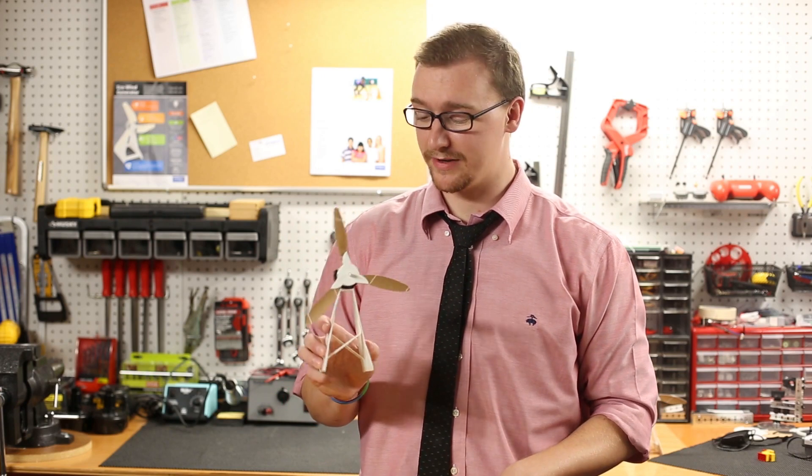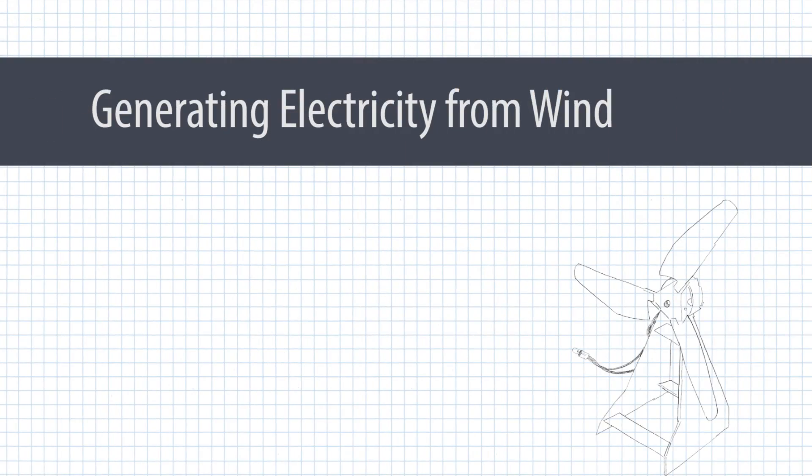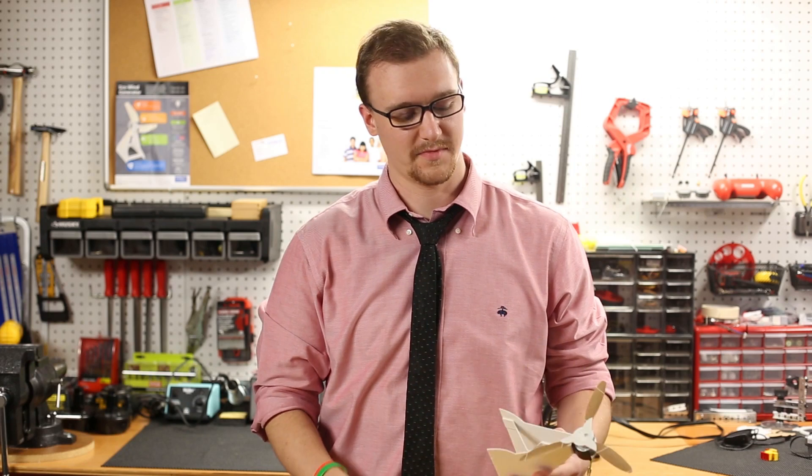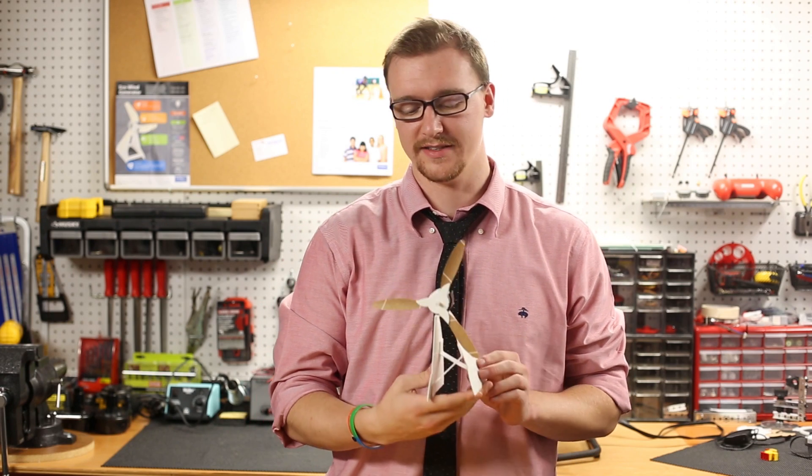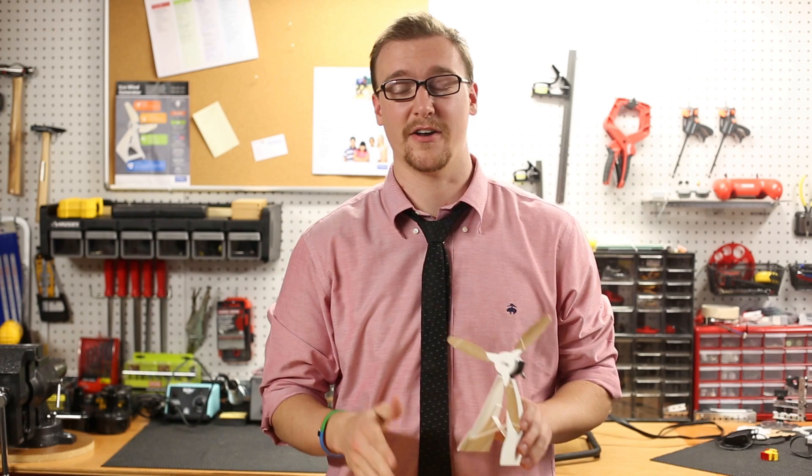And now that we're finished building the Eco Wind Gen, let's see how it works. When you have your fan set up, you need to take your Eco Wind Gen and then place it about a foot or a foot and a half away and then just turn the fan on.